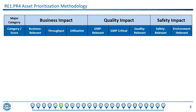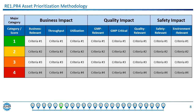When that's accomplished, we can begin to manage assets based on their relative importance to the business. Asset prioritization is broken down into three major categories: business impact, quality impact, and safety impact — where impact refers to the consequence of the asset failing. These major categories are broken down further into subcategories: three for business, three for quality, and two for safety. Scores and their respective criteria are then established for each category. It is best to have a data-driven approach utilized for criteria review and scoring.